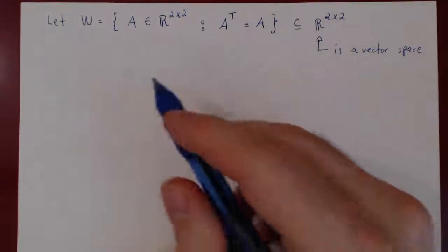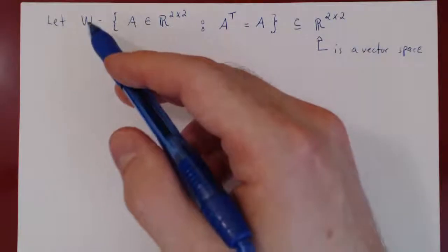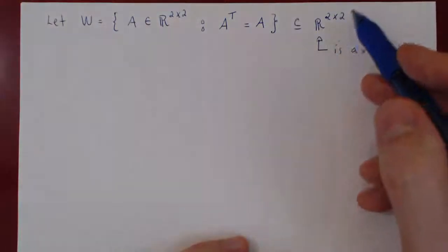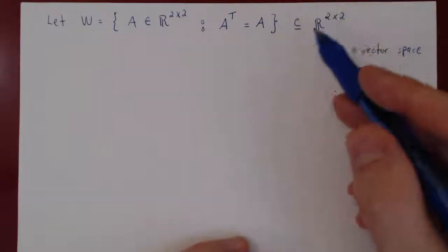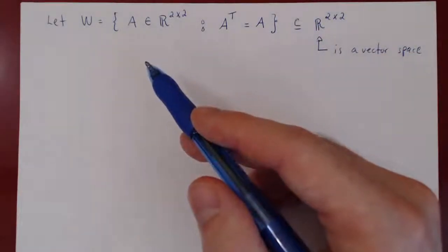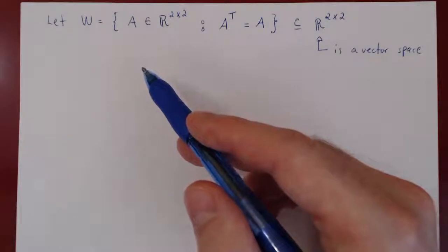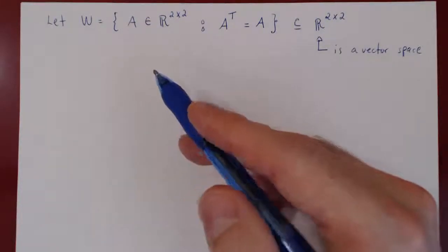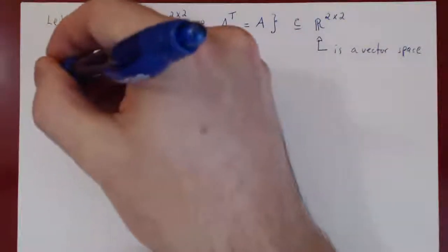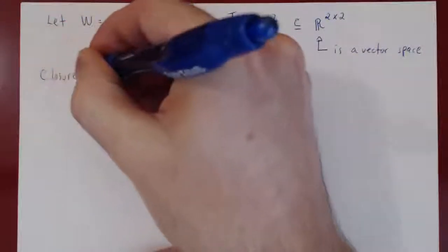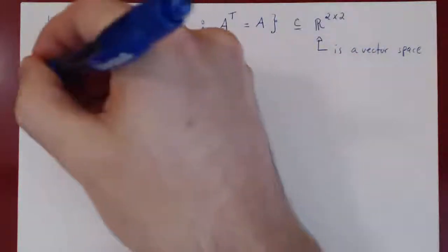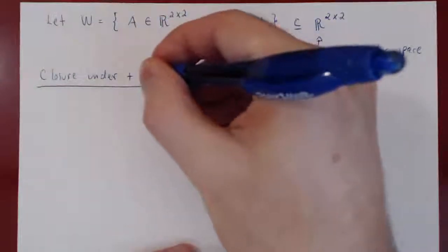So we can use the subspace theorem. The question is whether W is a vector space, but as it is a subset of a known vector space, we do not have to check all 10 conditions — only the two closure axioms. Let's check closure under addition first.